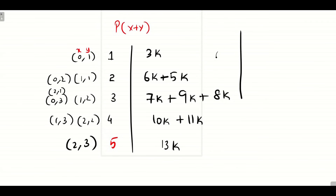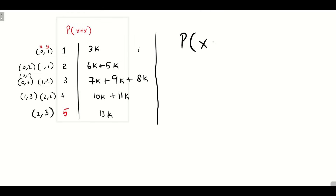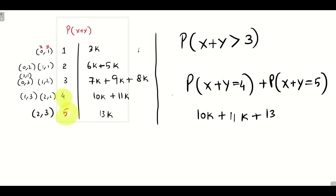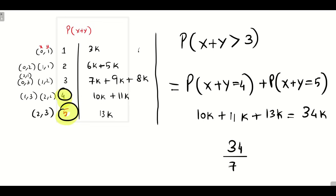The final question asks for the probability of X+Y greater than 3. We have two options: X+Y=4 and X+Y=5. Adding those values: 10K + 11K + 13K = 34K. Substituting K = 1/72, the final answer is 34/72, which can be simplified if possible.